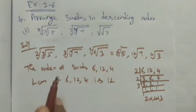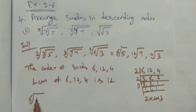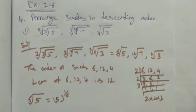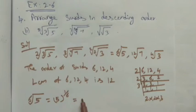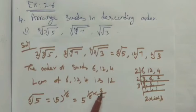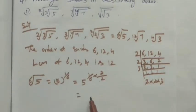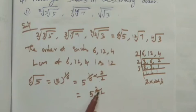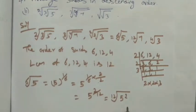Now we take the first term: 6th root of 5, which means 5 to the power 1 by 6. We have to convert it to 12th root by multiplying and dividing by 2: 1 × 2 = 2 divided by 6 × 2 = 12. This term equals 5 squared to the power 1 by 12 — that is 12th root of 5 squared, which is 12th root of 25.